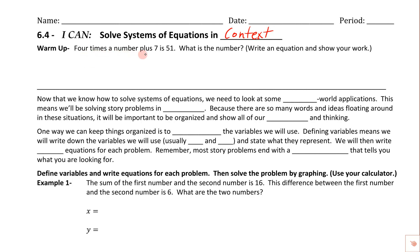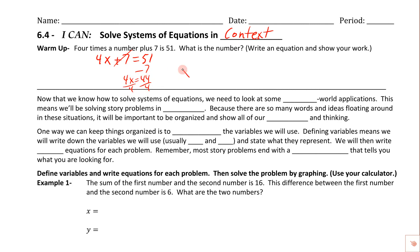The warm-up says: 4 times a number plus 7 is 51. What is the number? Write an equation and show your work. We don't know what the number is, so we use a variable: 4x + 7 = 51. We subtract 7 from both sides to get 4x = 44, then divide both sides by 4, giving us x = 11. So the number is 11.